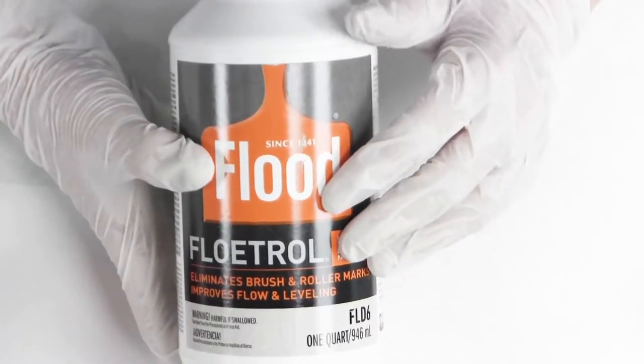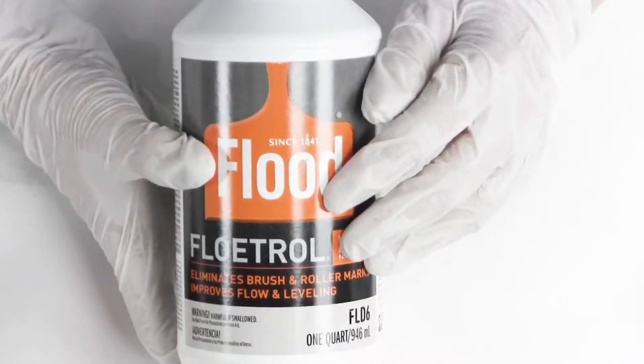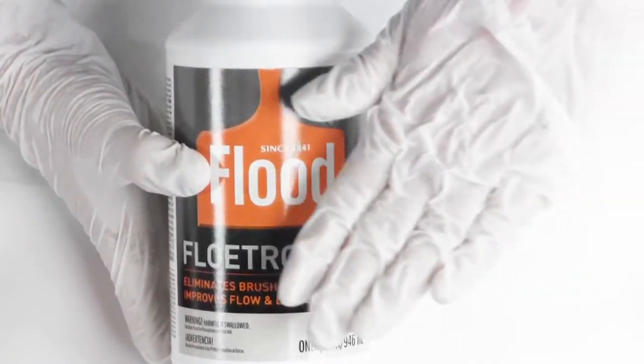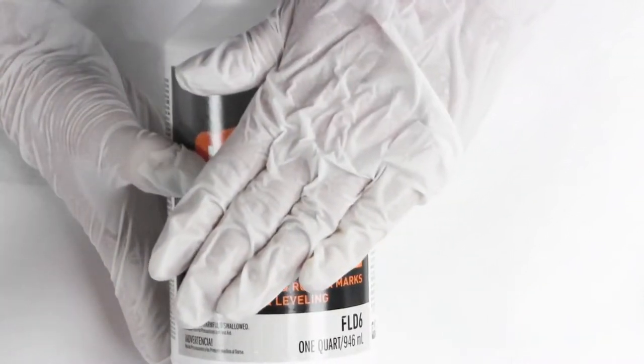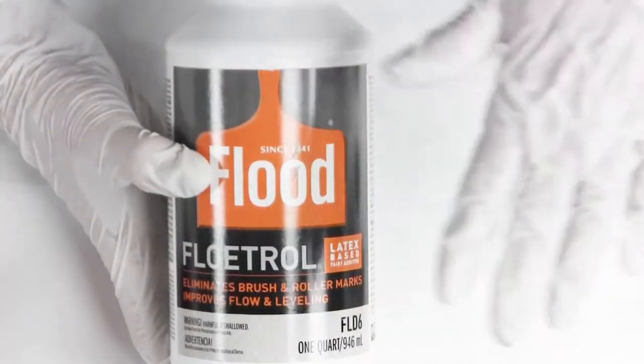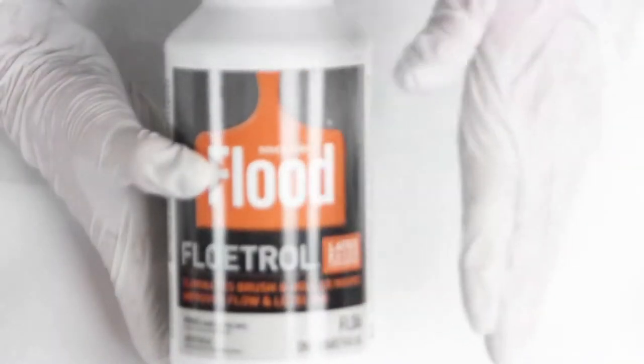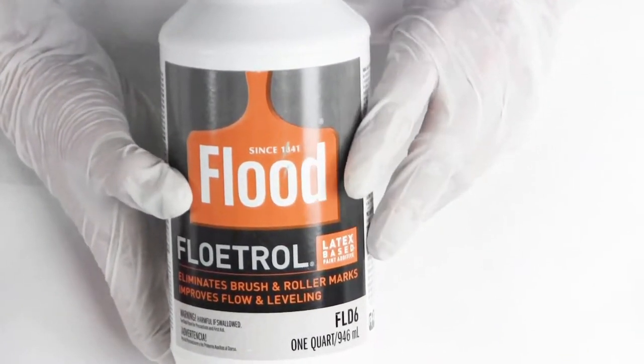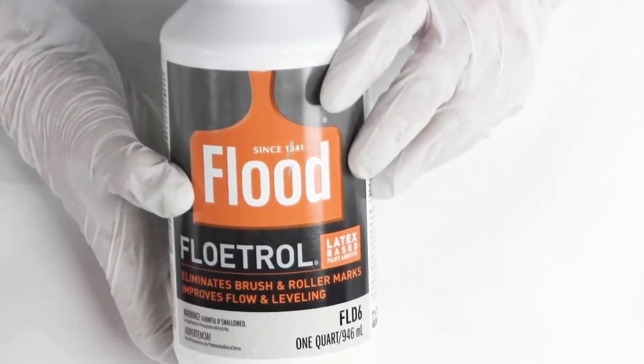So you increase your drying time and a painter can paint the wall of the house. It can go on smoothly and they're going to have a little bit more open time. But why would that be bad in a dirty pour?